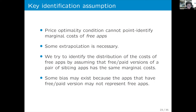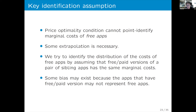The second identification issue is that when there is a free app, the first-order condition is only an inequality. The price optimality condition cannot point-identify the idiosyncratic marginal cost shock of free apps — we don't know how marginally or deeply free those apps are. In the current paper, we identify the distribution of costs of free apps by assuming that the prepaid version of a pair of sibling apps has the same marginal cost. This may introduce some bias but is the most feasible approach.